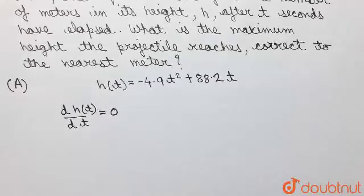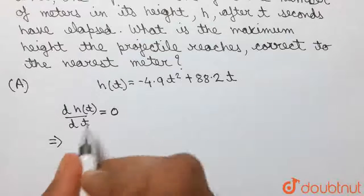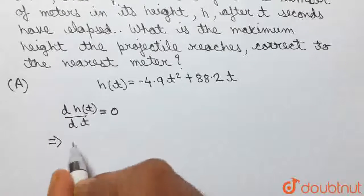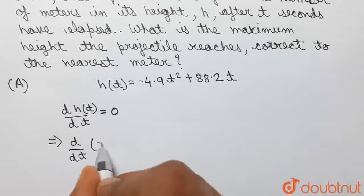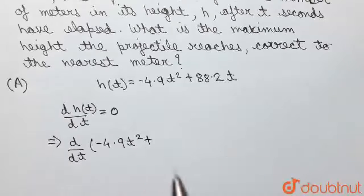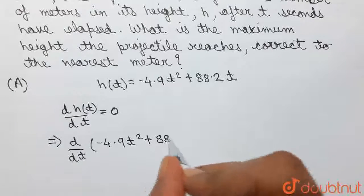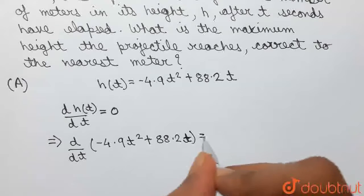So, substituting the value of h(t) in this equation, we have d/dt of (-4.9t² + 88.2t) and this is equal to 0.